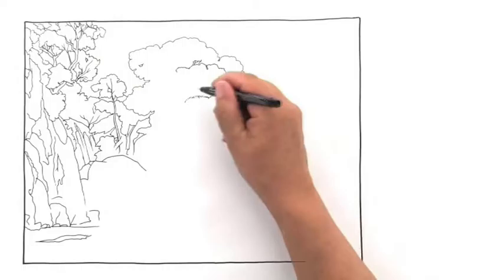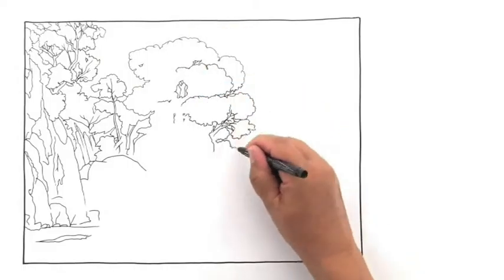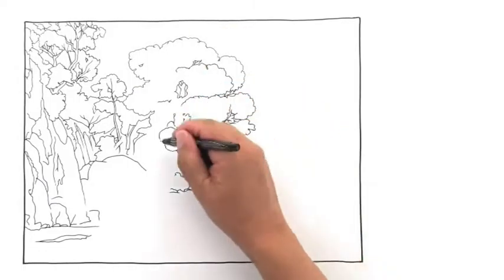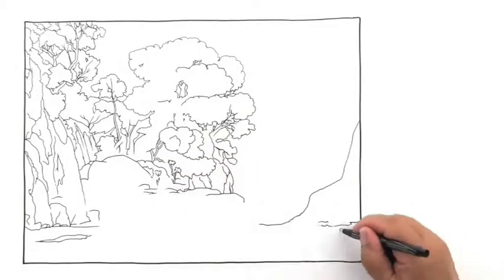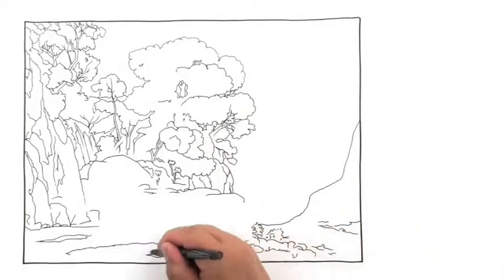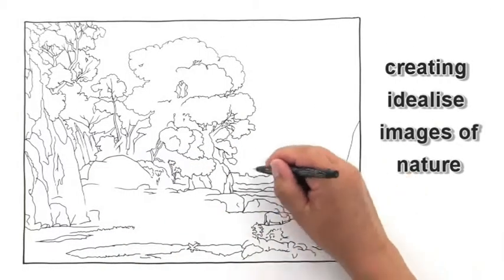A Frenchman who immigrated to Rome, Lorraine was a meticulous draftsman. His paintings were based on numerous drawings made on location, but he never shows the harsh realities, creating instead an idealized image of nature.